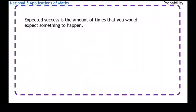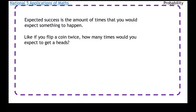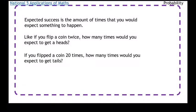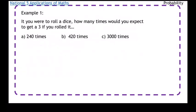The second topic in probability is called expected success, and it is how many times you would expect something to happen given the probability. So if you were to flip a coin twice, you would maybe expect to get a heads at least once. Or you flip the coin 20 times, you would probably expect to get roughly about 10 heads and 10 tails. So you've got to work out the probability of something and then use that with how many times you're doing it.